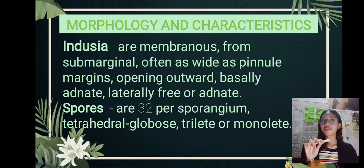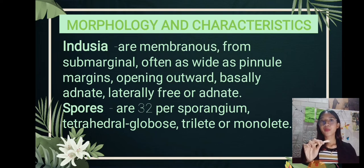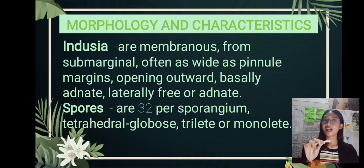The spores are 32 per sporangium, tetrahedral, globose, trilete, or monolete.